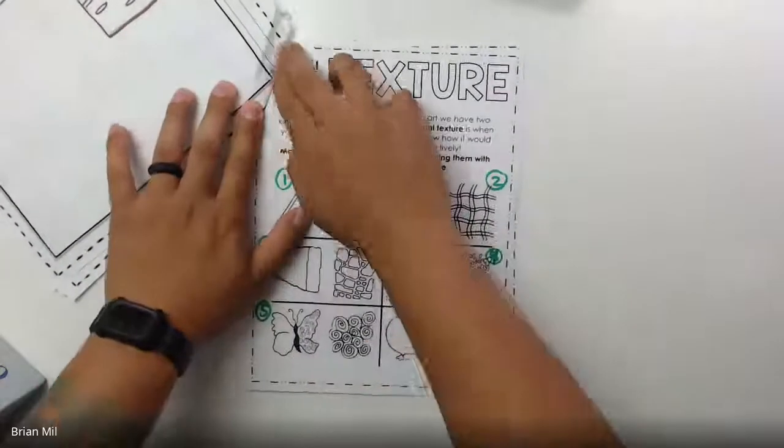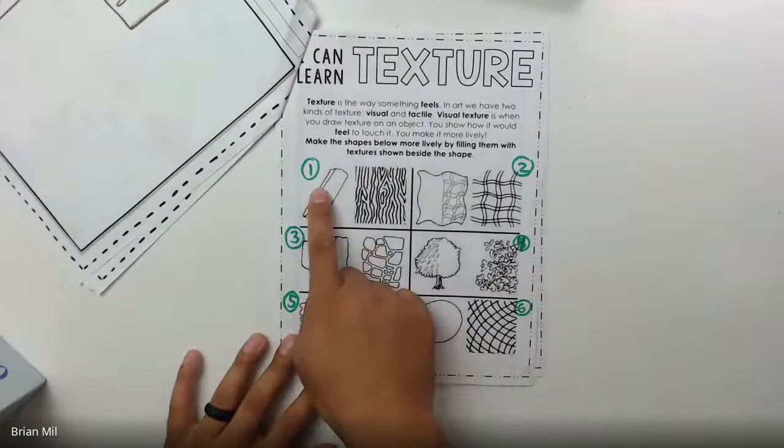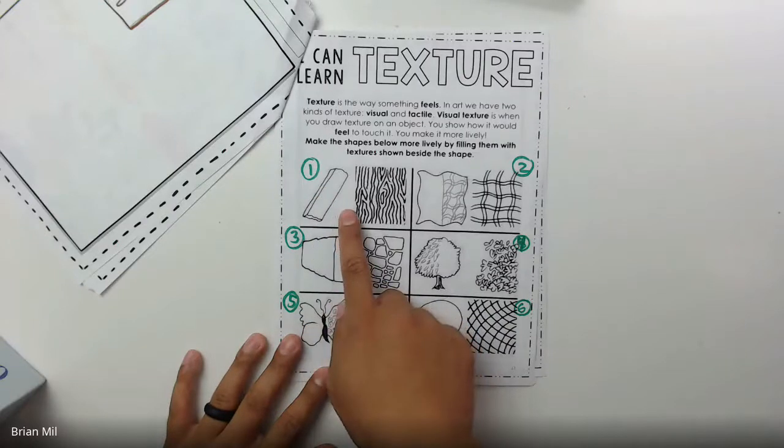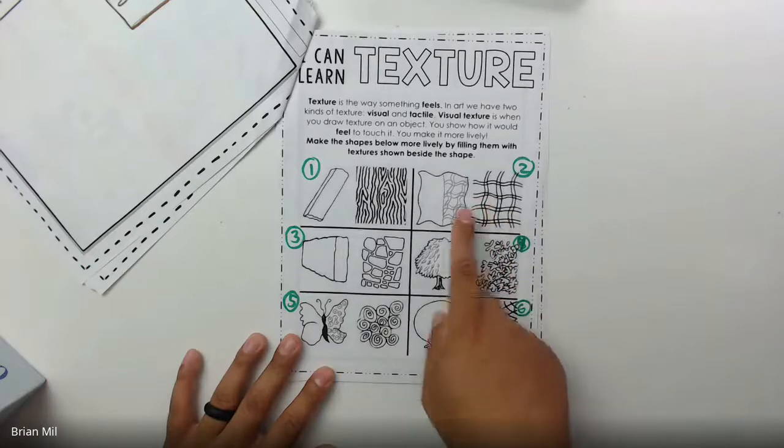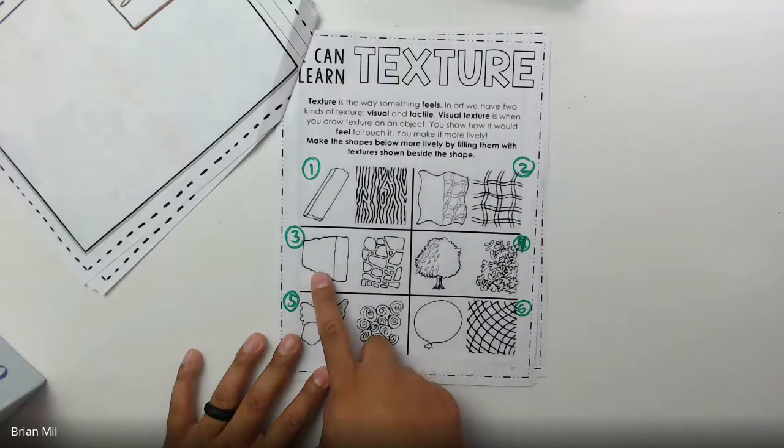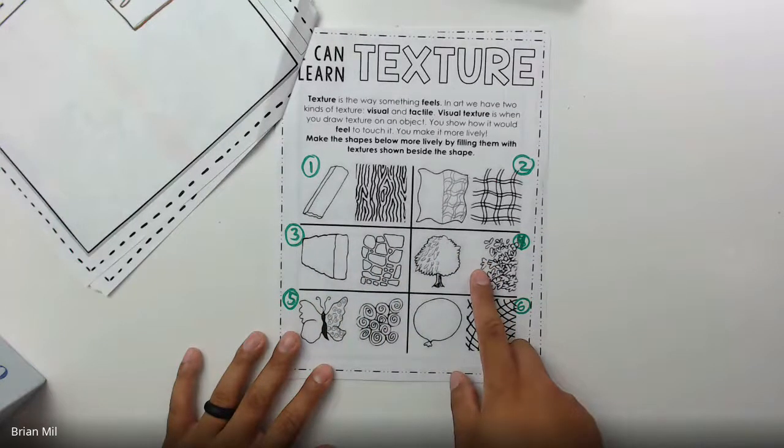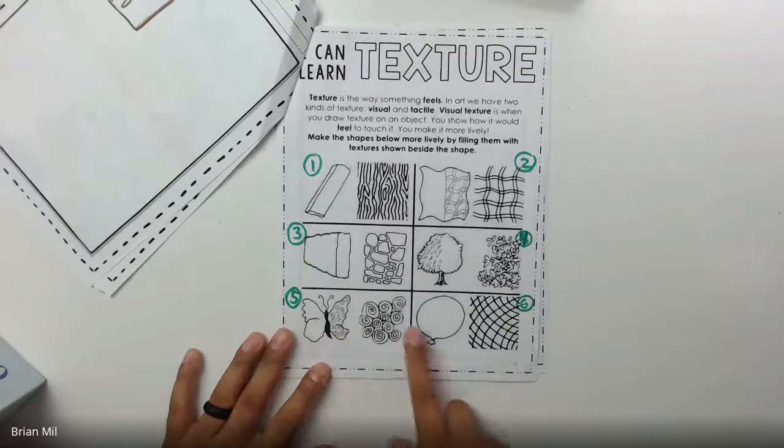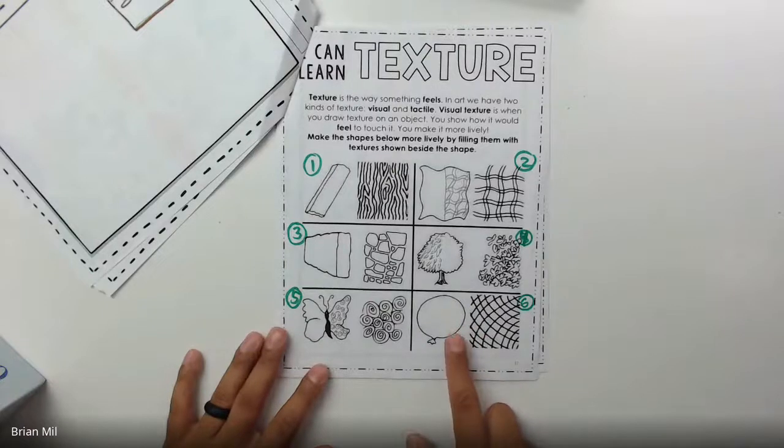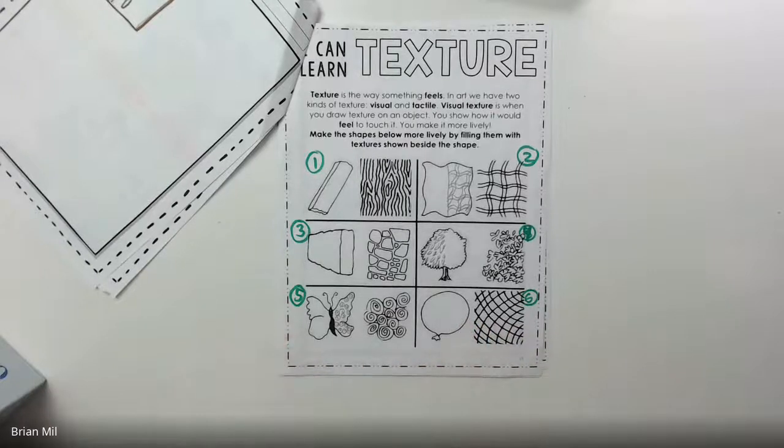So if we look at these six examples below, right here, we can see what they have here. So the first one, I labeled it number one, is a plank of wood. Number two, it looks like it's supposed to be a blanket. Number three, it looks like it's supposed to be a stone slab. Number four, it's supposed to be a tree. Number five, it looks like it's supposed to be a butterfly. And number six, it looks like it's supposed to be a balloon.